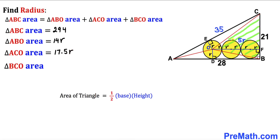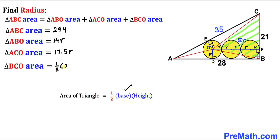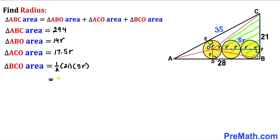Finally, the area of triangle BCO has base 21 and height 5r. So area = ½ × 21 × 5r = 52.5r.